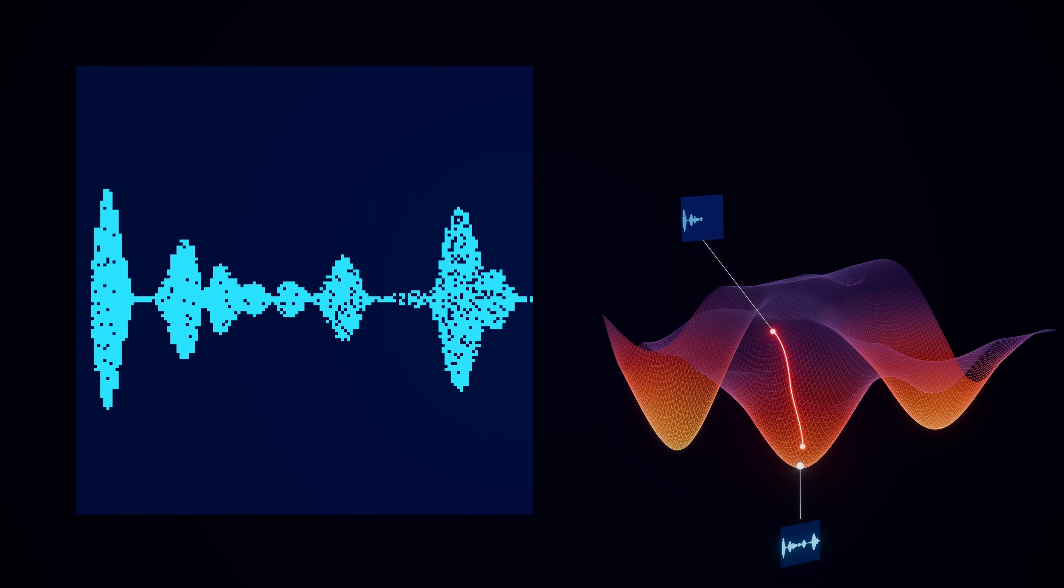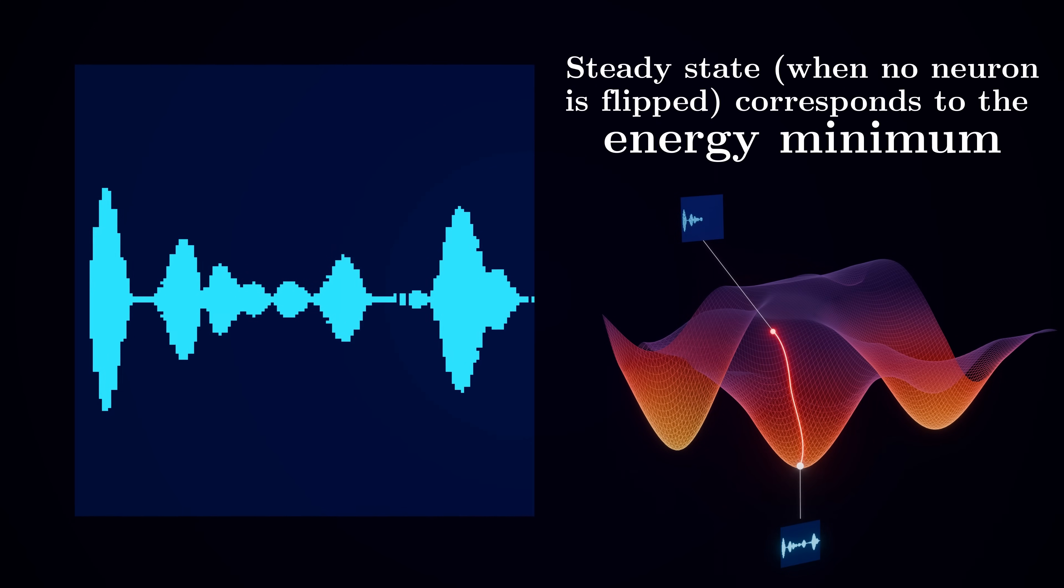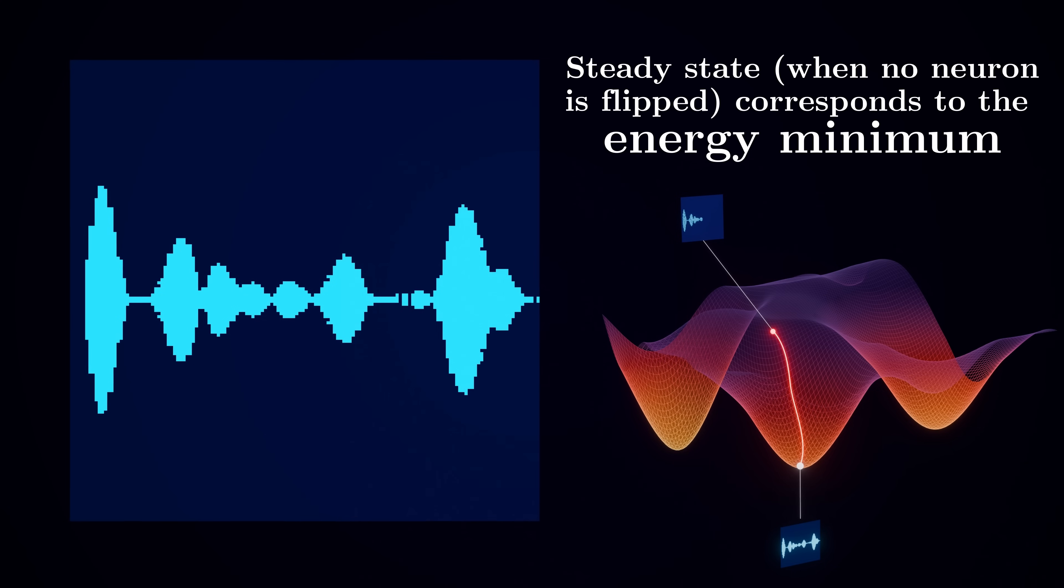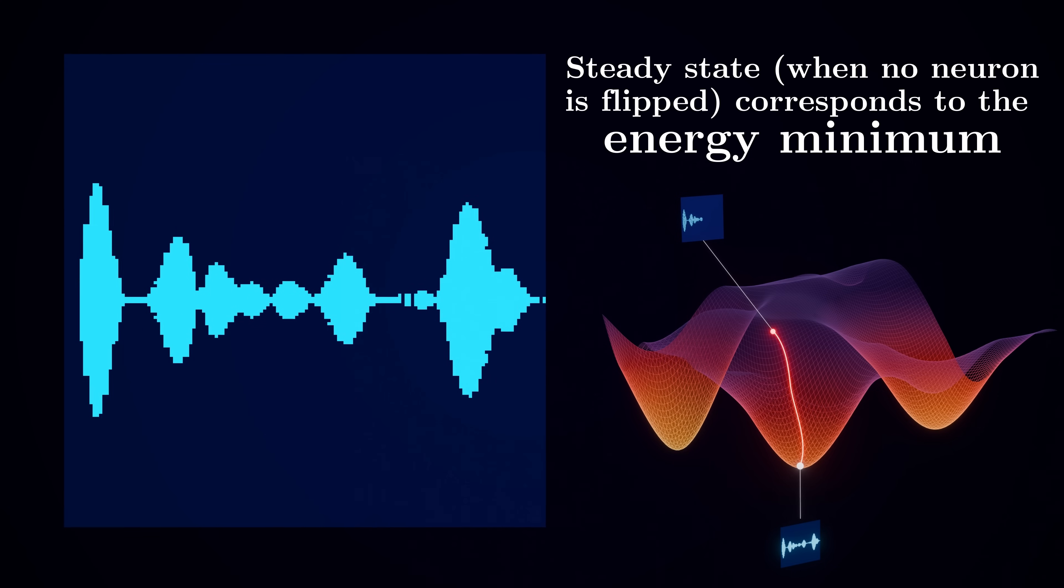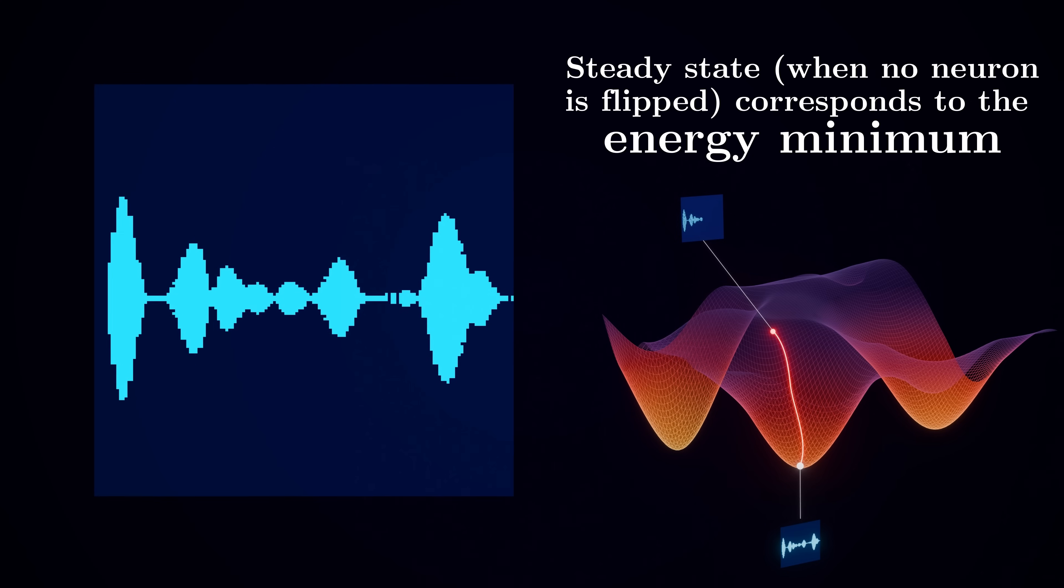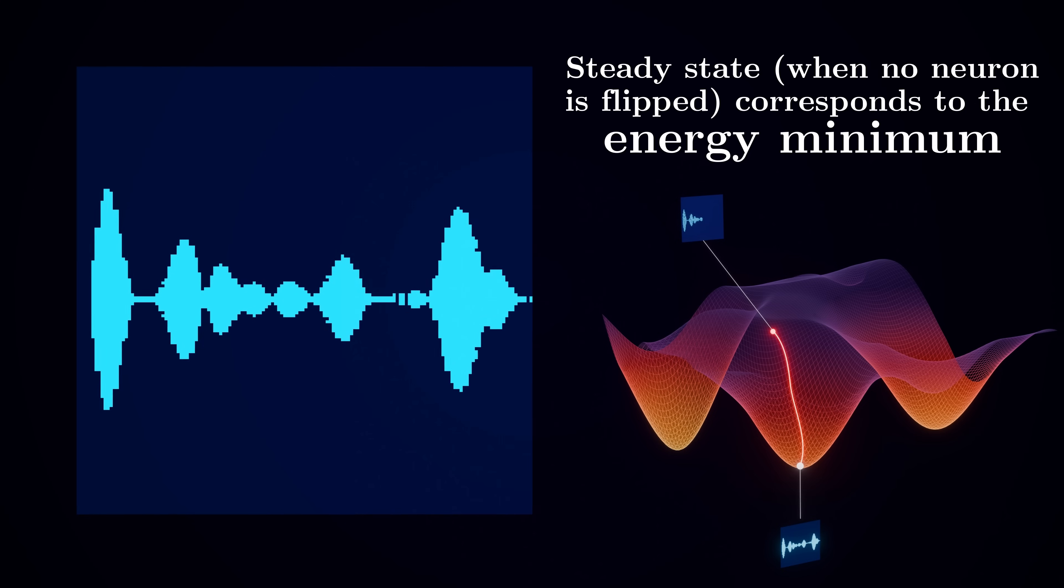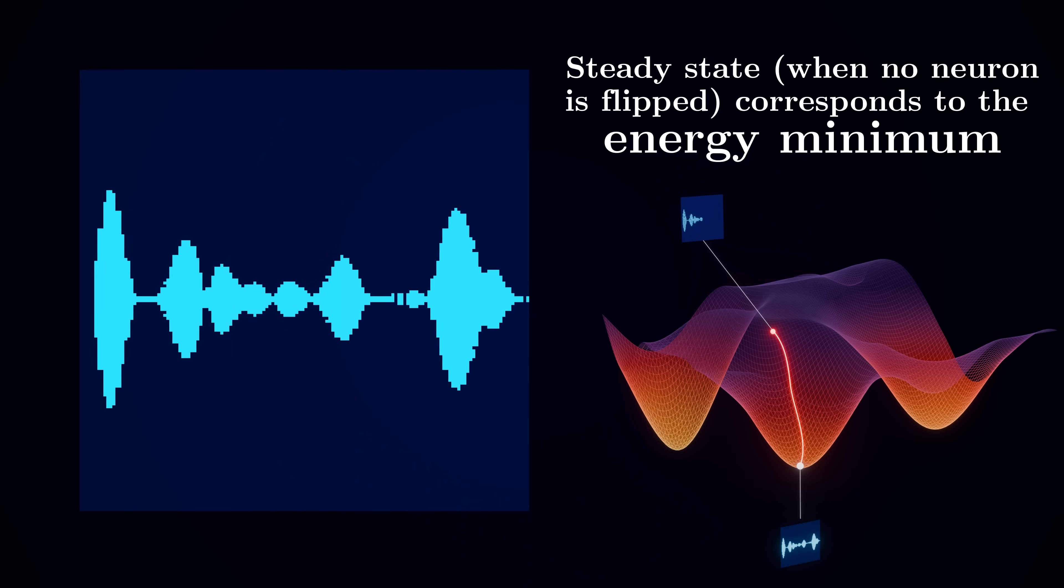At some point, however, we will reach a configuration where flipping any neuron would lead to an increase in energy. So no further adjustments would be necessary. At that point, the network has converged to a stable configuration where each neuron's state agrees with the majority vote. This stable configuration represents a local minimum in the energy landscape.